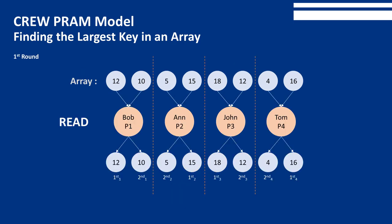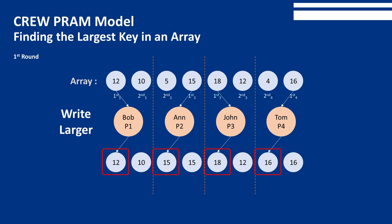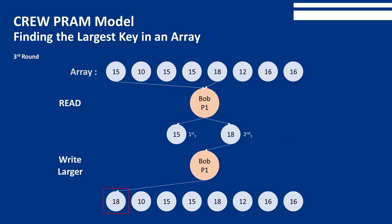In this figure, we need only half as many processors as array elements. Each processor reads two array elements into local variables — first and second — then writes the larger of first and second into the first of the array slots from which it read. After three such rounds, the largest key ends up in S[1]. Each round is a step in the algorithm. In the example shown, n equals 8 and there are log 8 equals 3 steps.